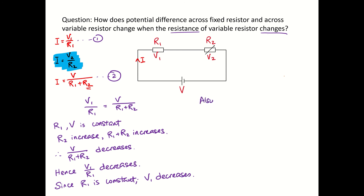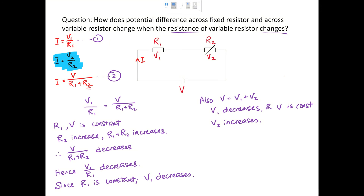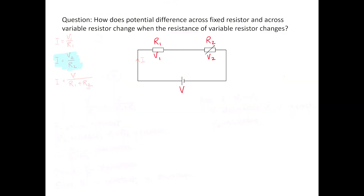Also, V equals V1 plus V2. So when V1 decreases and V is constant, V2 increases. So we know when R2 increases, V2 also increases. Now, how about when R2 decreases?